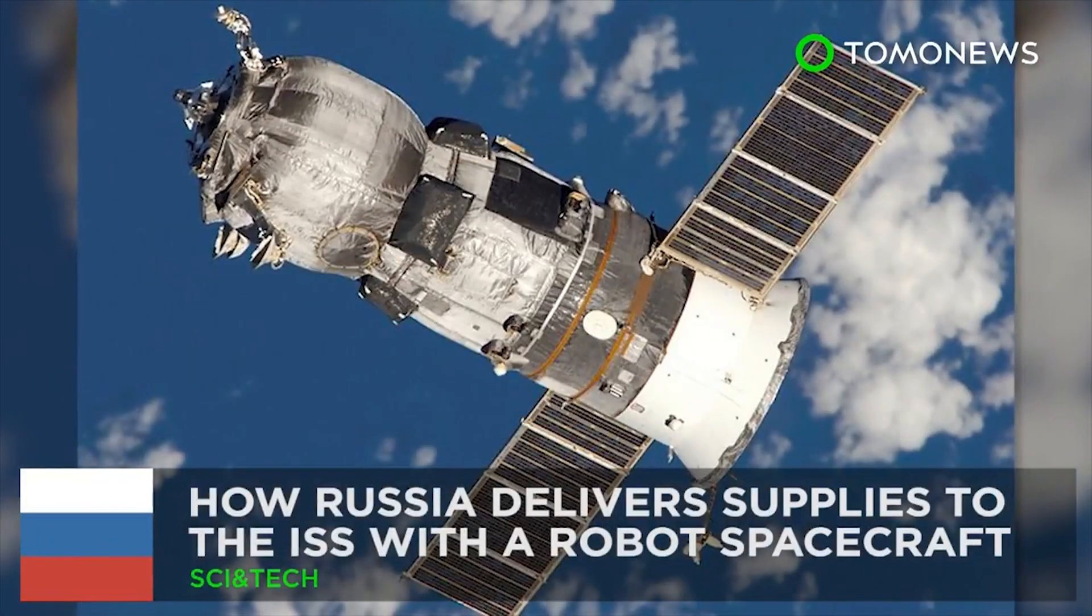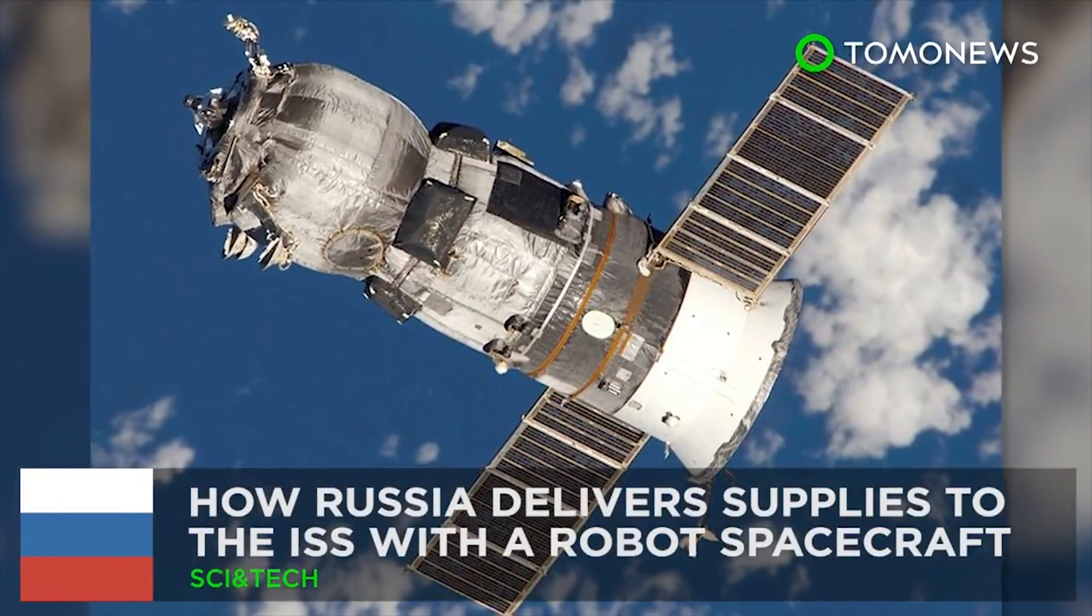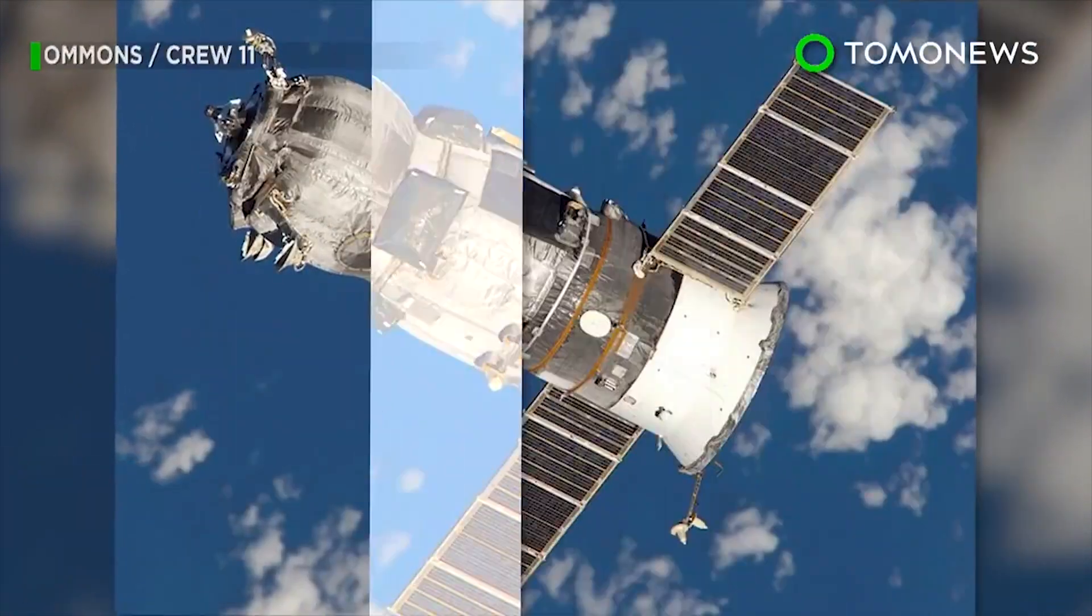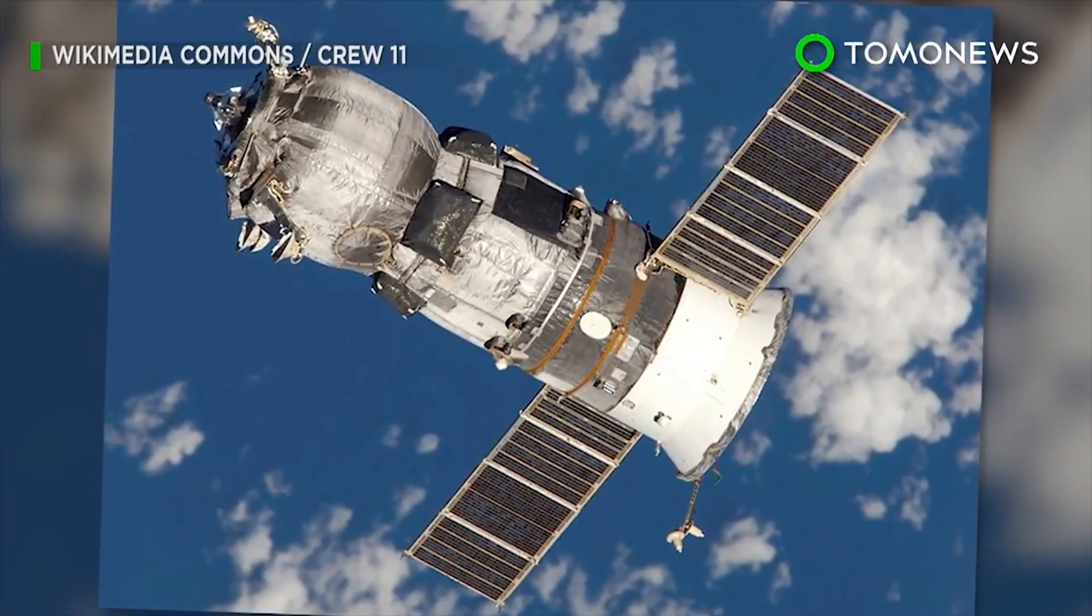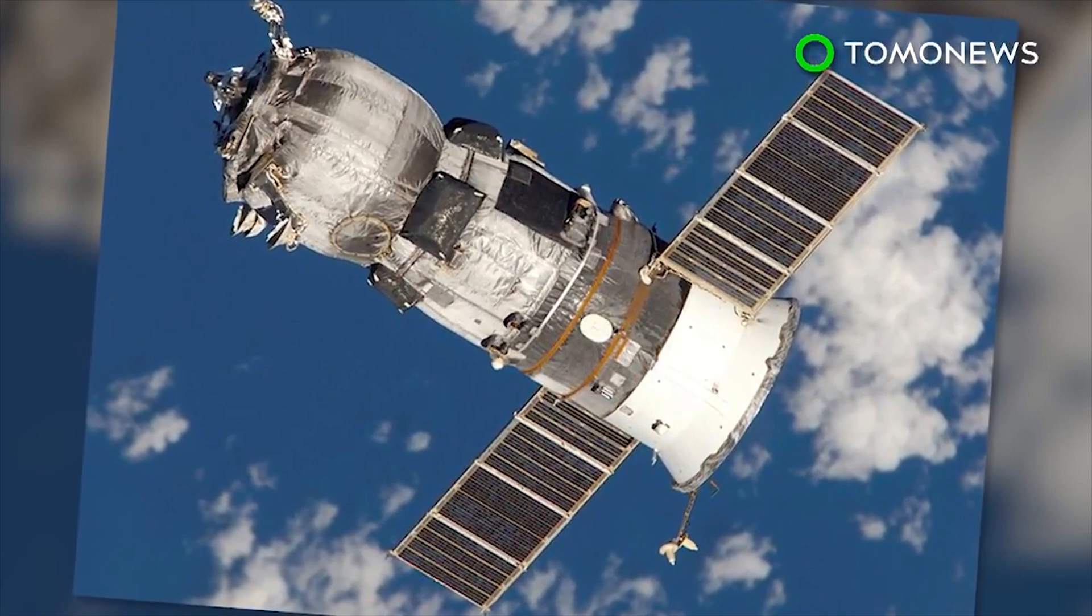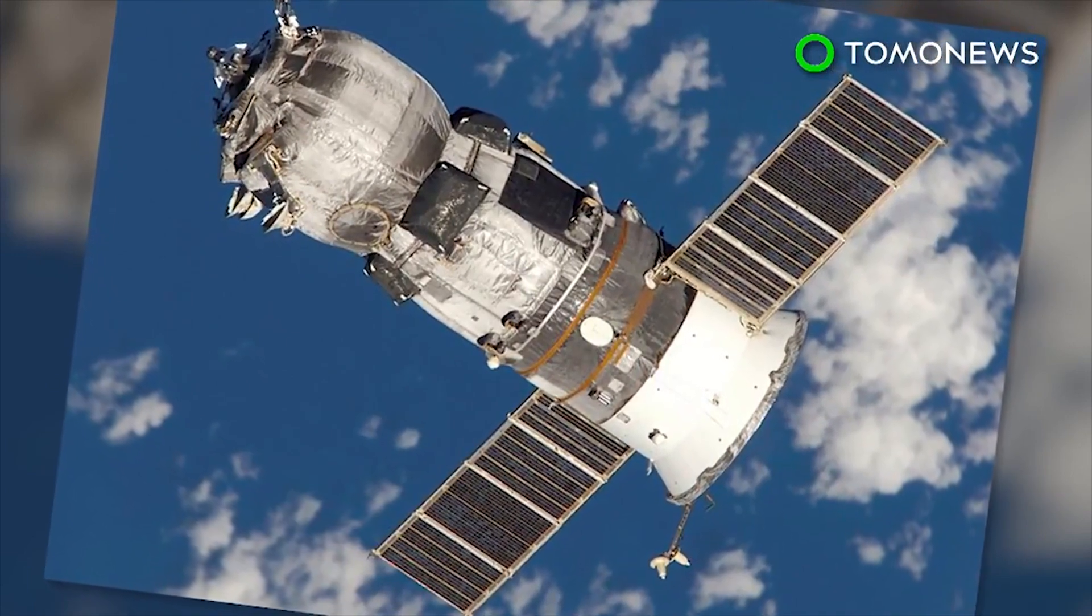This is how Russia's robot spacecraft delivers supplies to the ISS. This Russian spacecraft may look like your run-of-the-mill satellite, but it actually plays a critical role in delivering supplies to the International Space Station.